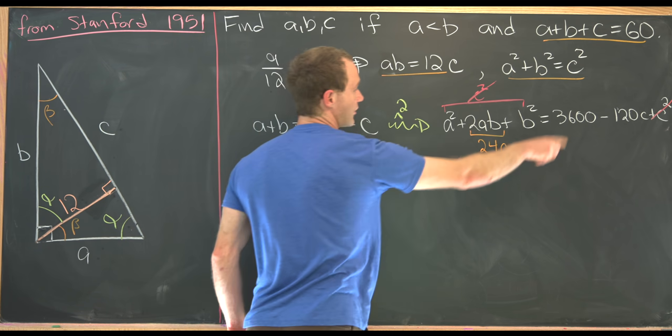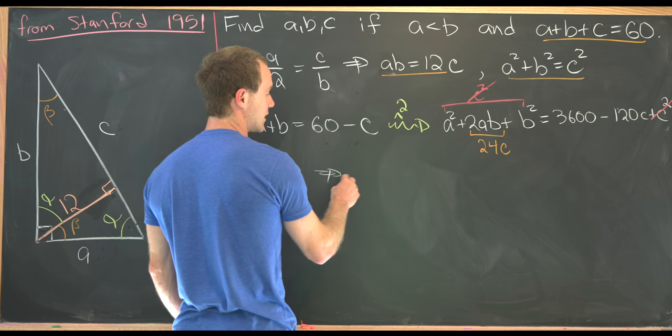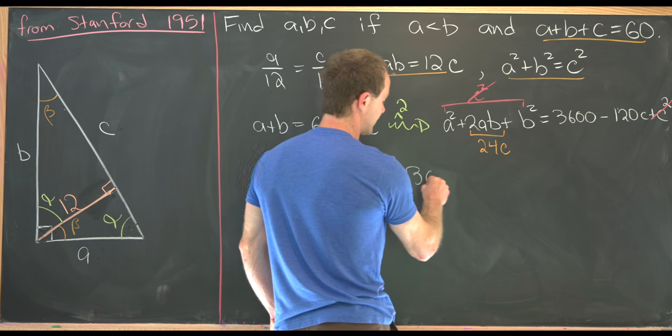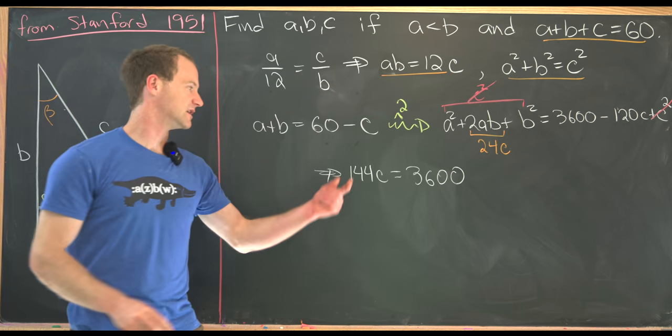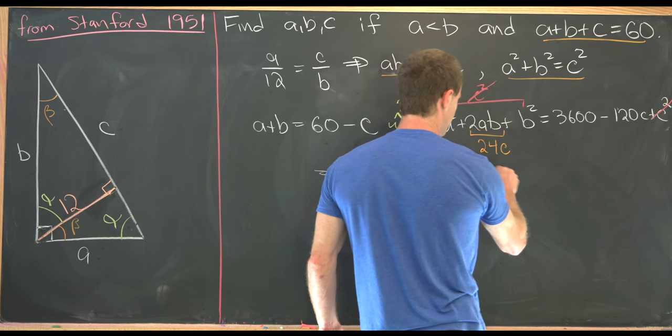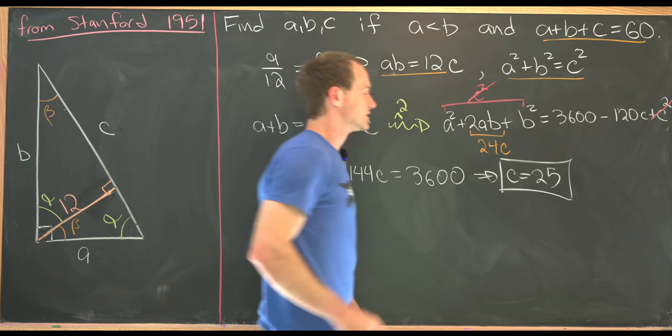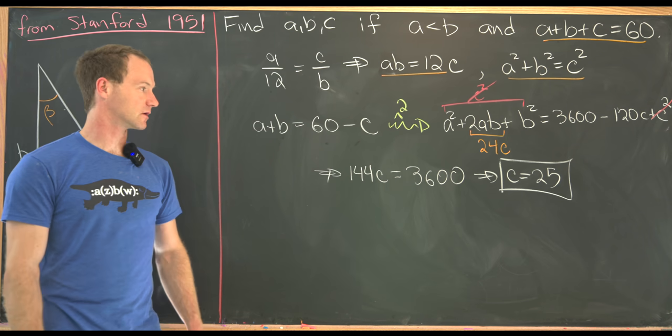Notice that we can move the 120C to the other side of the equation, giving us 144C equals 3600. But then dividing both sides by 144, we will see that C is equal to 25. So we know the hypotenuse of our triangle already.